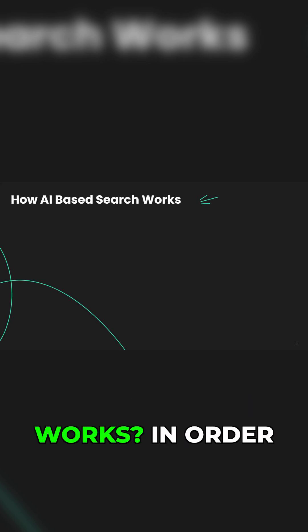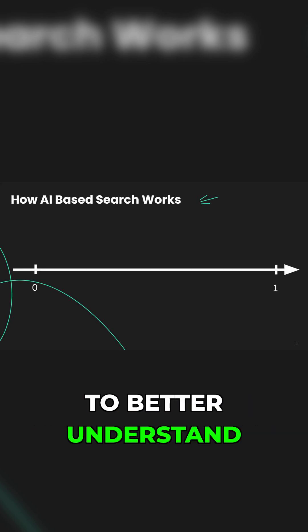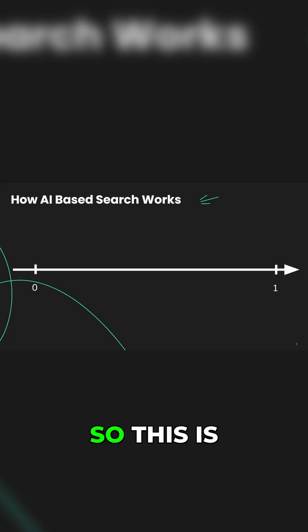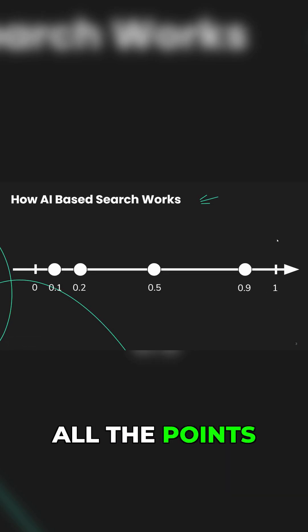How AI-based search works: In order to better understand this, let's have a look at the following line. This is coming from basic math. We have a straight line where here's the zero, here's the one, and all the points in between will have values from zero to one. Let's say our target point is this 0.6.